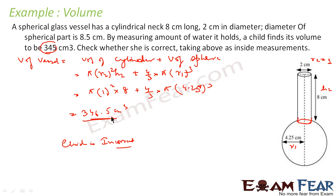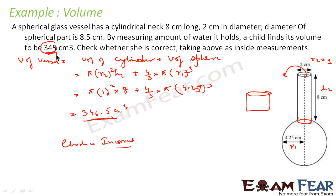To find the volume of a vessel, you can either compute it directly or fill it with water to the maximum and then measure that water in another vessel. The volume of the figure equals the volume of water it can contain. By this experiment, the child found 345 cm³ — meaning he made some mistake in his calculation. The actual value is 346.5 cm³.